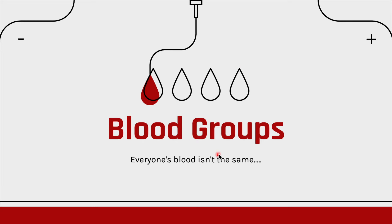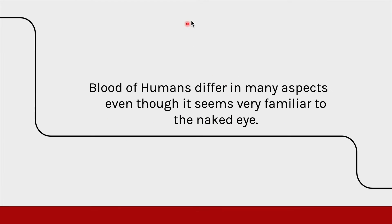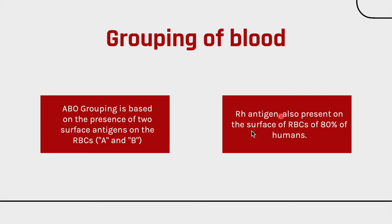In today's lecture we are going to look at blood groups and donation of blood. Whenever you see blood from two different people, they look pretty similar to the naked eye — it's just a red liquid. But when we go to the microscopic level, there are many different ways in which you can differentiate two people's blood.